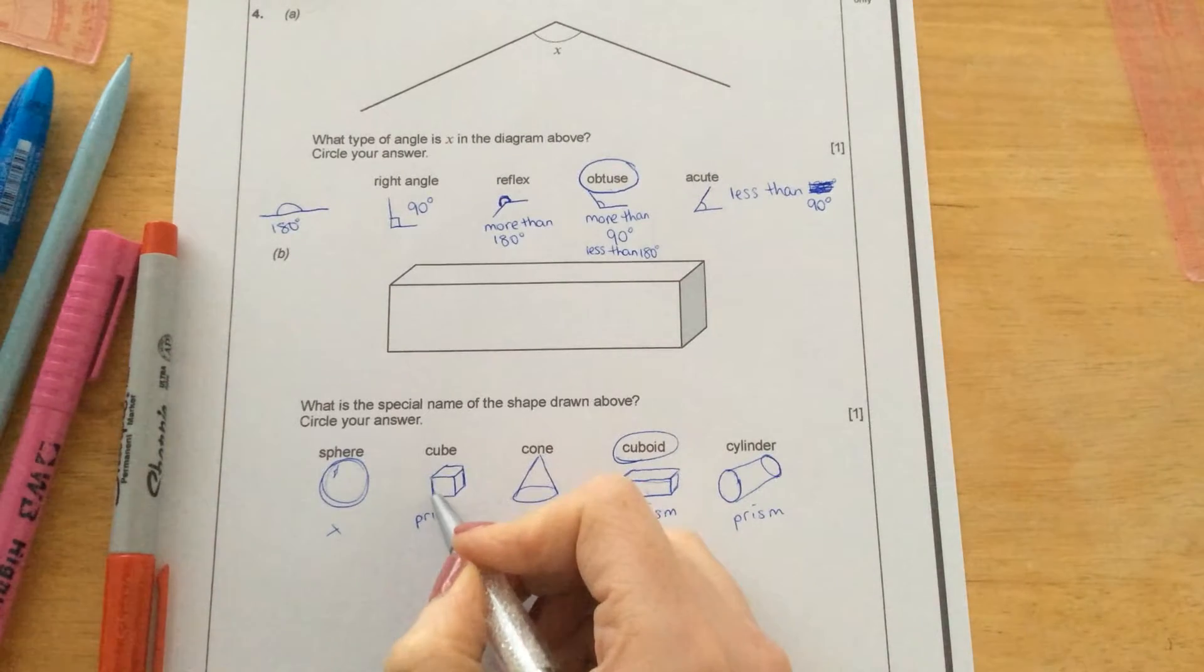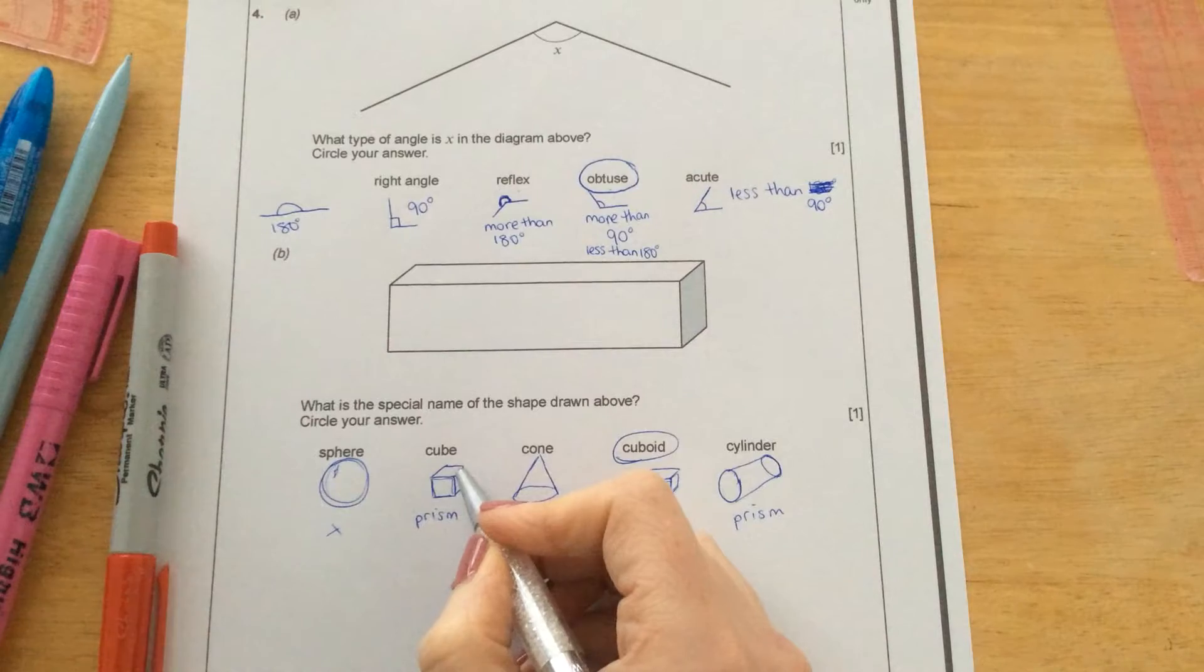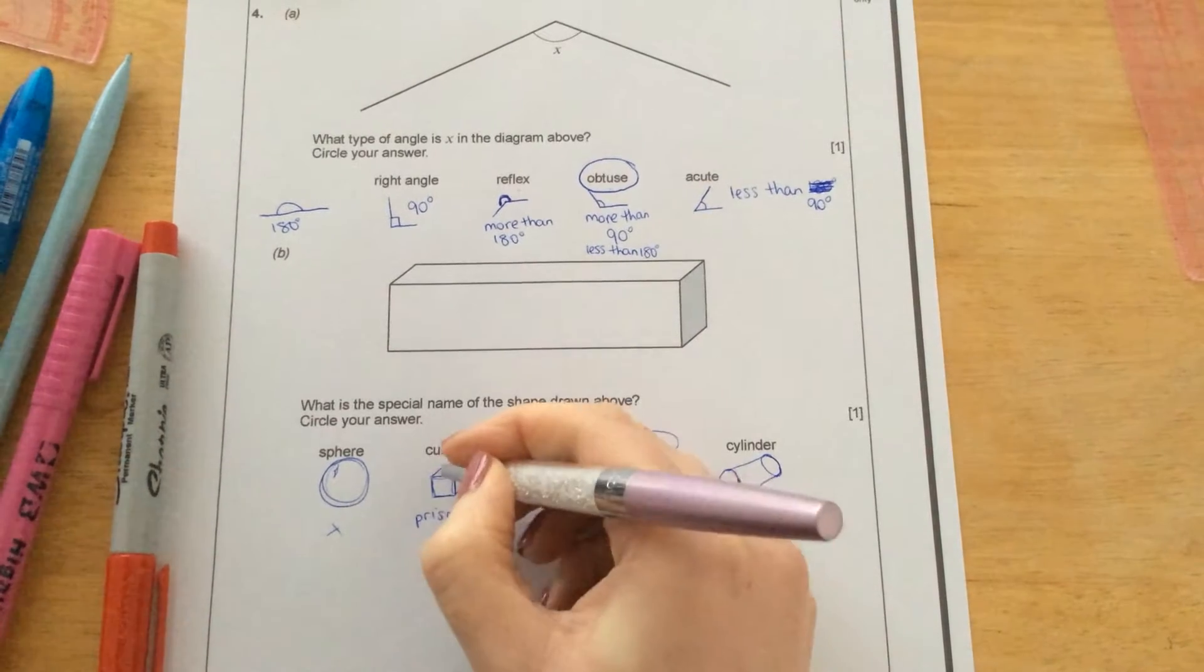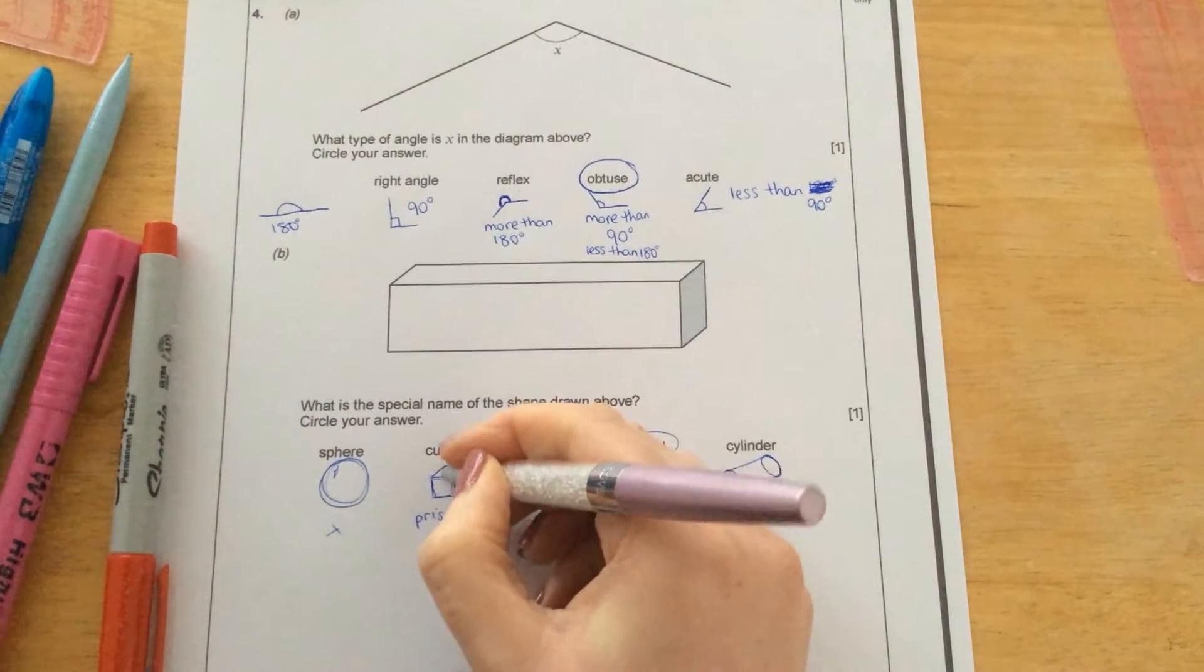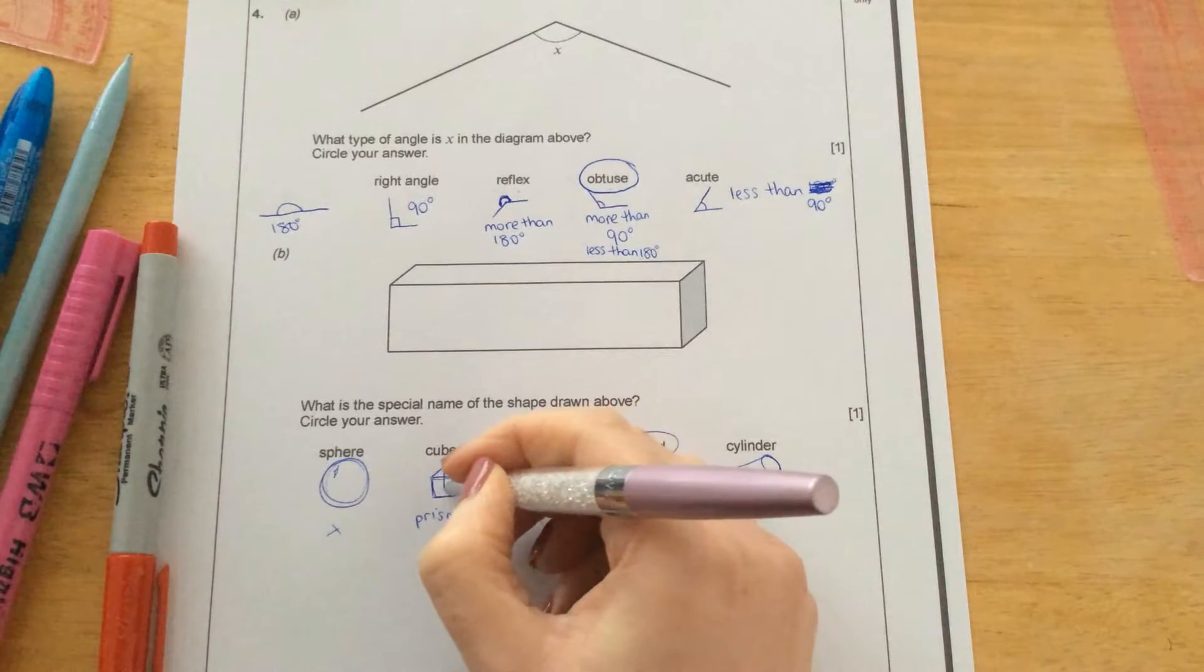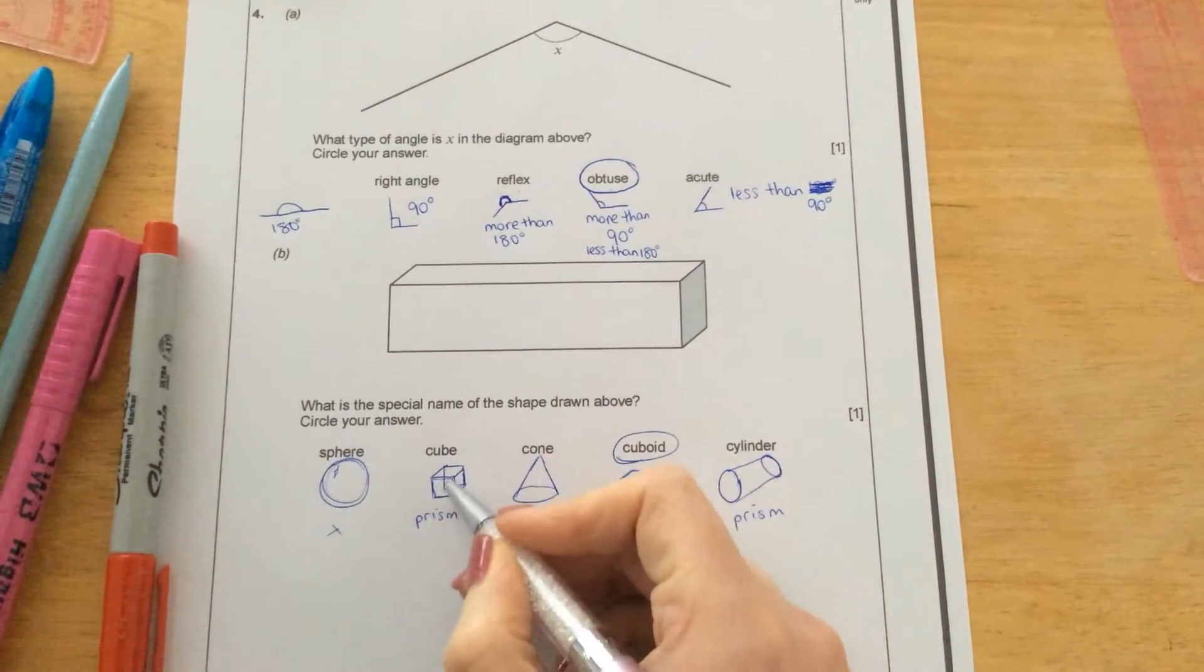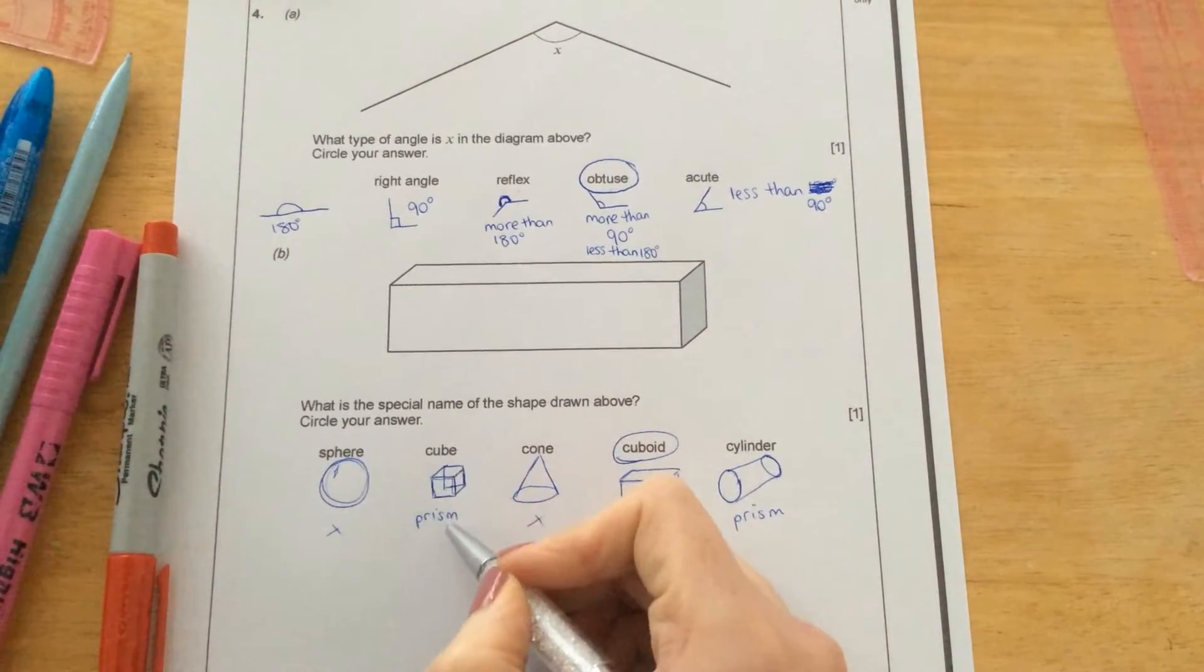This one is basically a 3D square. So it's a square that's been stretched out, and it'll have a square on the other end. If I can do this. There we are. So we'll have a square here, and a square at the end there. So that makes this a prism.